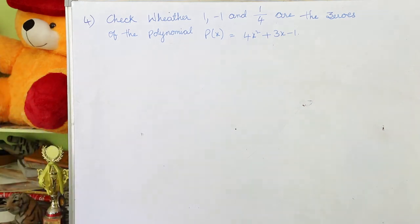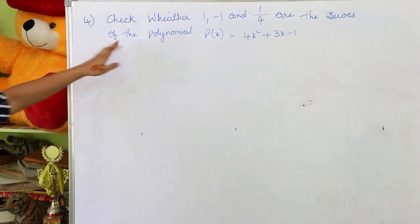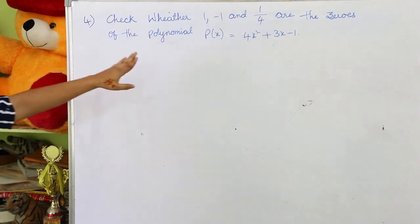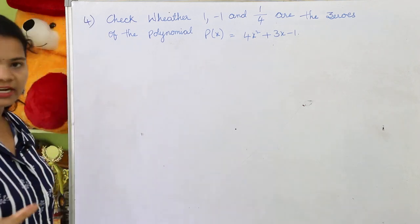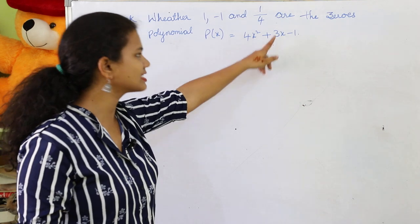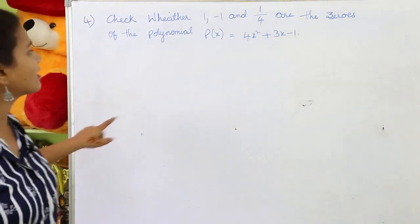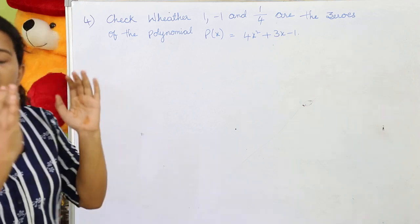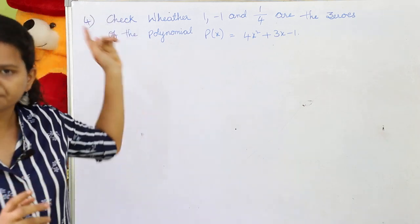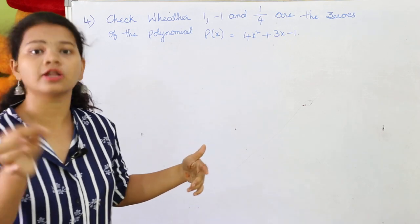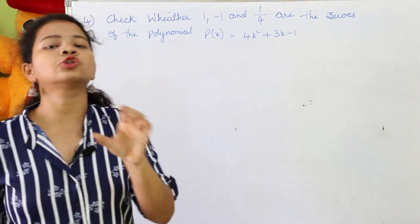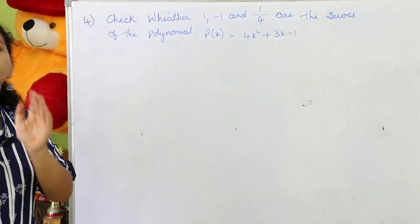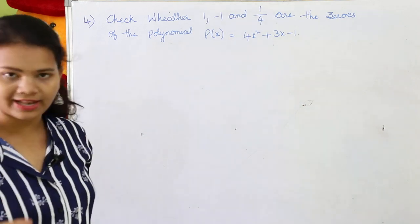Let's start with the fourth question: check whether 1, -1, and 1/4 are the zeros of the polynomial p(x) = 4x² + 3x - 1. They ask us to check whether these given values are zeros of this polynomial or not. If I substitute 1, -1, or 1/4 in place of x, that should result in 0 for it to be a zero.